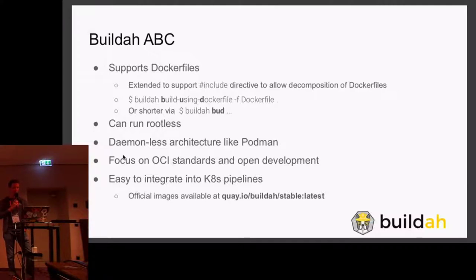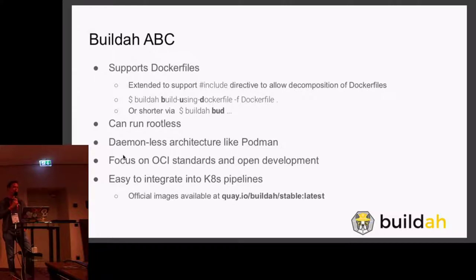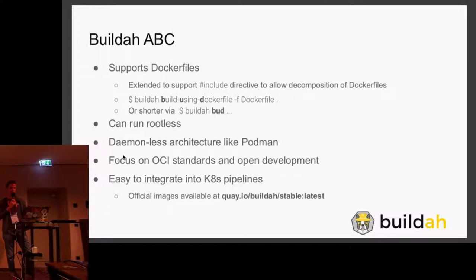Buildah extends Dockerfiles to support the include directive — it basically throws in the C preprocessor when a Dockerfile has the suffix .in. Buildah can compile Dockerfiles using the 'buildah build-using-dockerfile' command, or just short 'bud'. It runs daemonless with a similar, nearly the same architecture as Podman. The containers don't need very strict isolation. It's also easy to integrate into Kubernetes pipelines, because it's a simple process you start. It can run rootless, and there are official images that can be downloaded from Quay — for Podman, Skopeo, and Buildah.